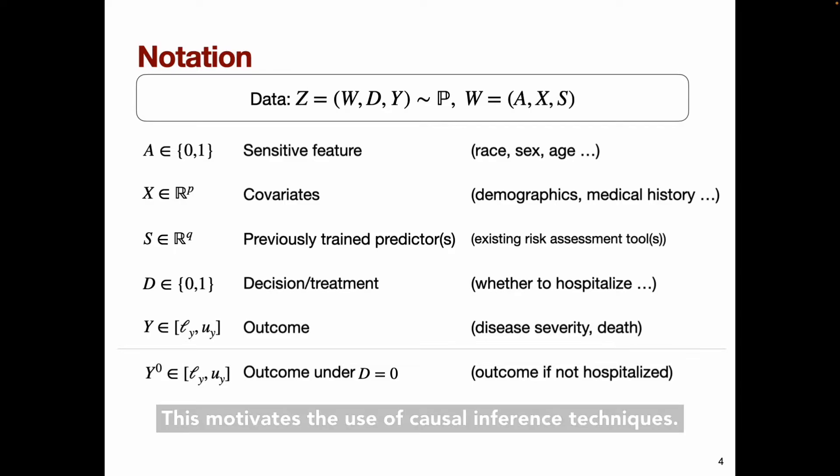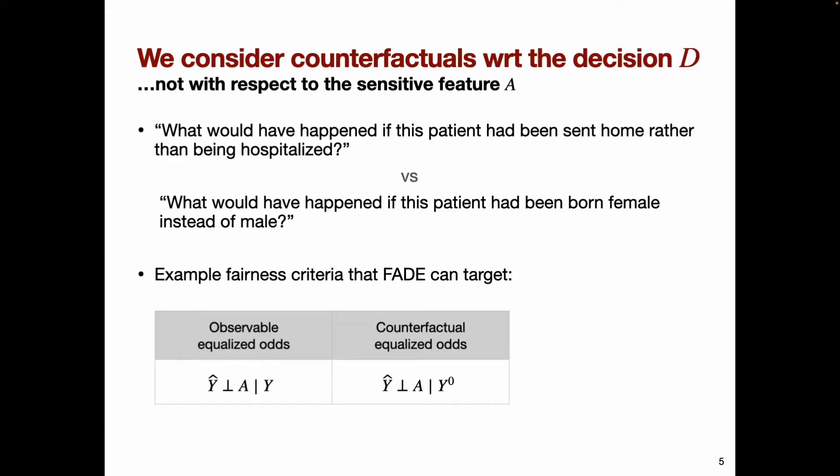There are many types of counterfactual fairness, so it's important to note that the counterfactuals we're interested in are with respect to the decision D. These counterfactuals are relevant to questions like, what would have happened if this patient had been sent home rather than being hospitalized? Many papers in counterfactual fairness instead consider counterfactuals with respect to the sensitive feature, which are relevant to questions like, what would have happened if this patient had been born female instead of male?